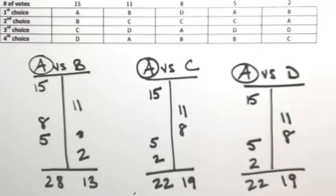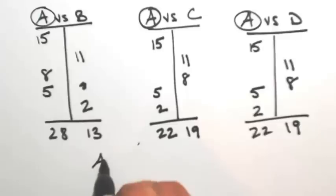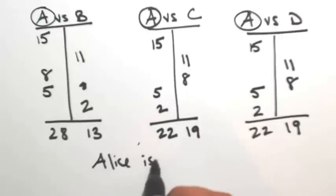And so since A won against all of the competitors, A is the Condorcet winner. So in other words, Alice is the Condorcet winner.